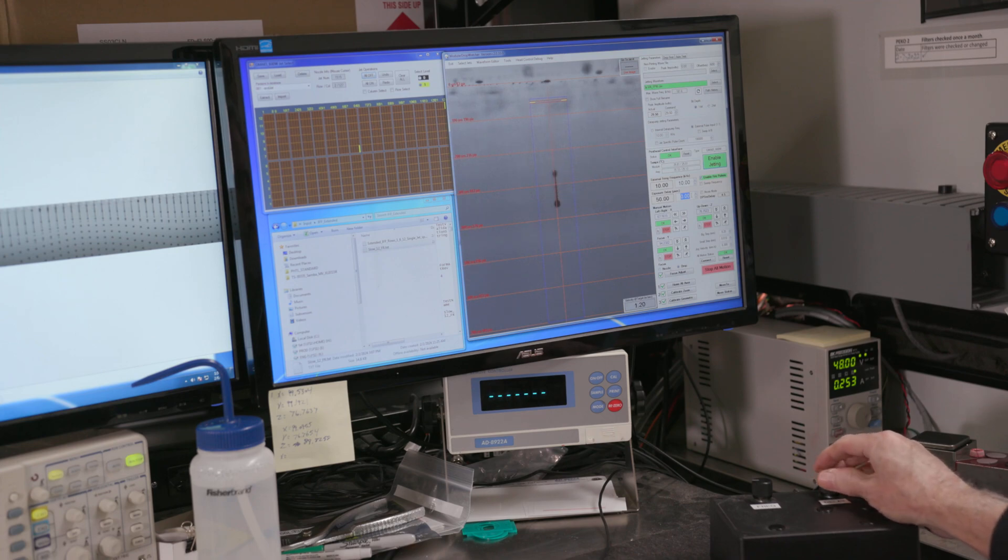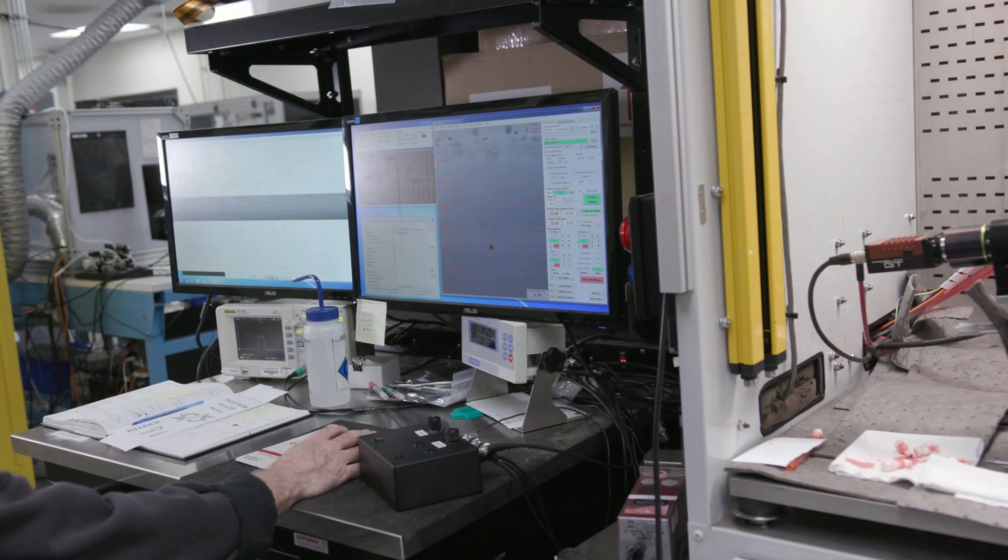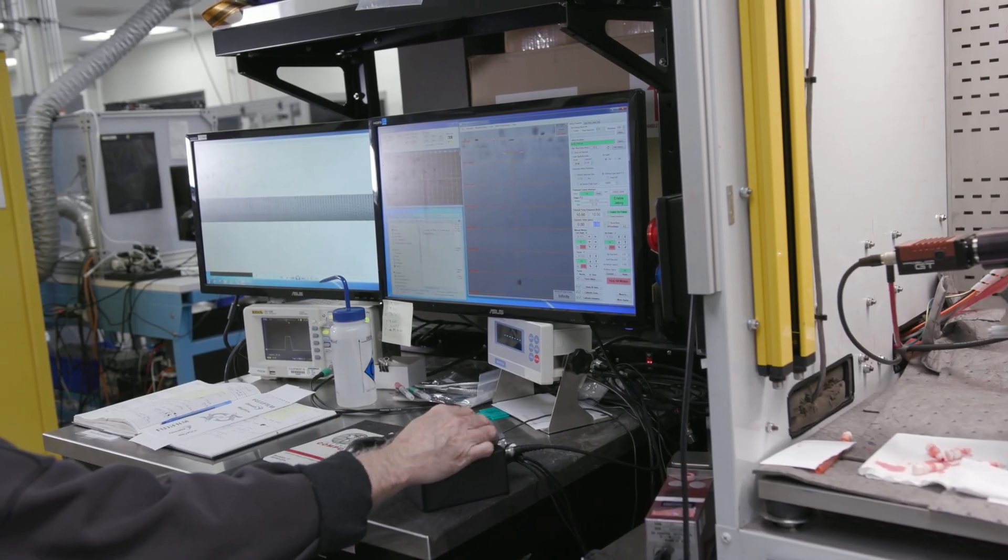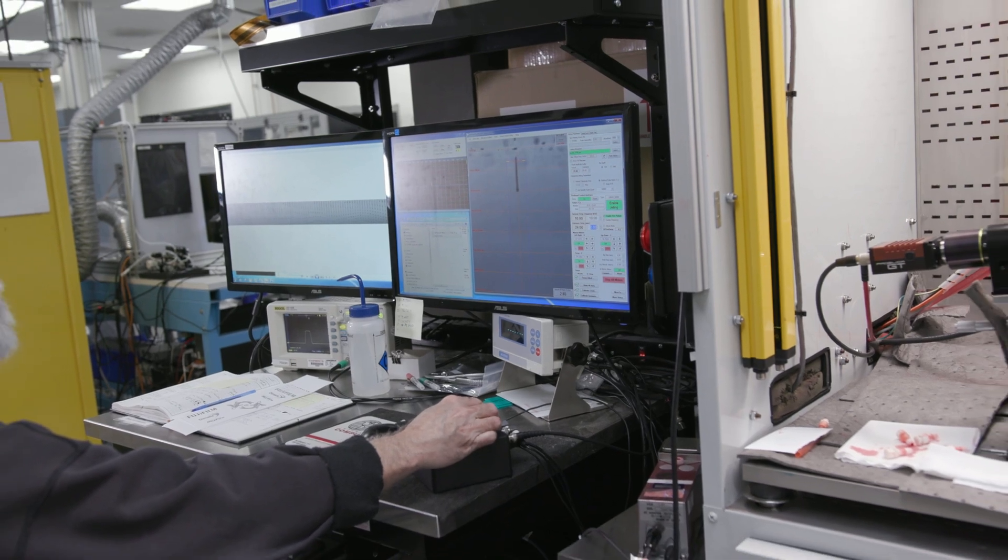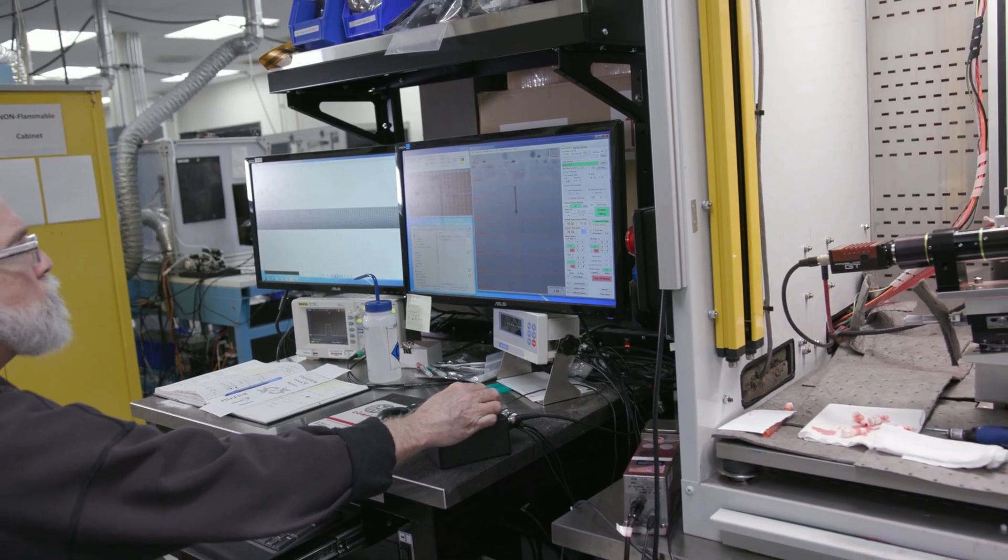These print heads being tested have anywhere from 128 to 2048 nozzles. Once an operator has managed to hone in on a singular nozzle, their task is to examine the drops coming from it. These drops are measured in picoliters, which means they are extremely small. So small that one raindrop can contain tens of millions of picoliters.